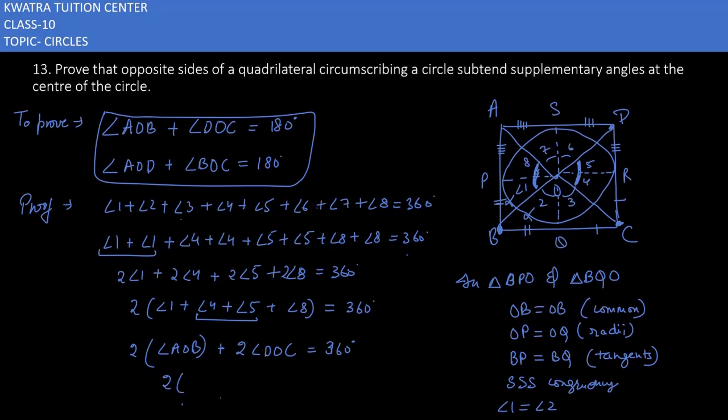Now you can take two common. So you have 2(AOB + DOC). And just divide it with 2. So if you will divide it with 2, you will get 180 degree as the answer.